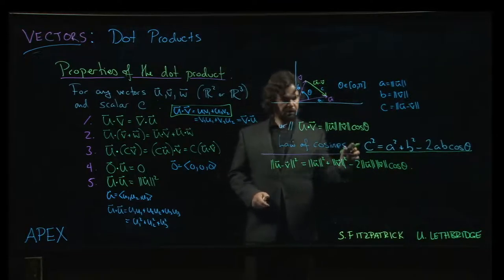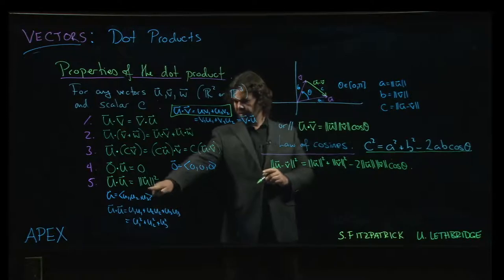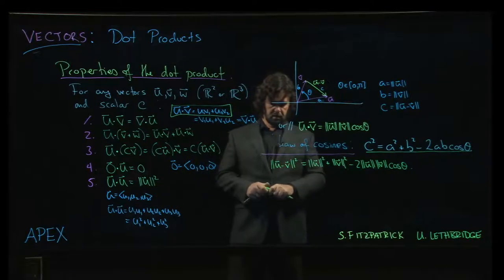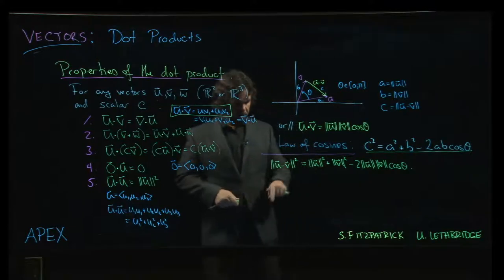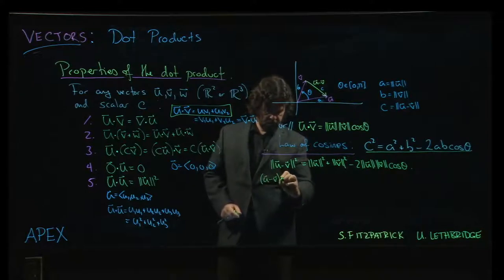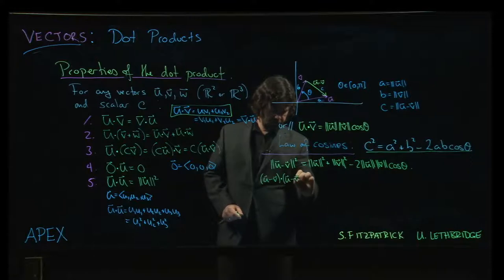Okay, so the first property that we're going to rely on is this fifth property here. So u minus v, we're squaring it, but the magnitude squared, what that really means is u minus v dotted with u minus v.